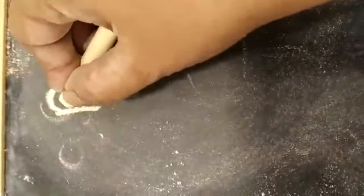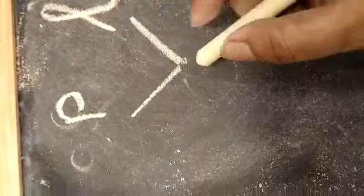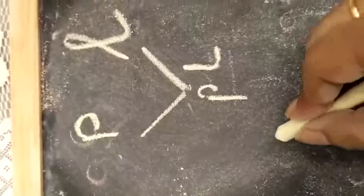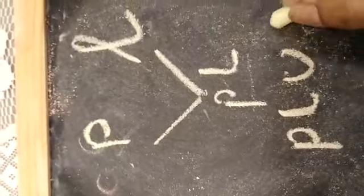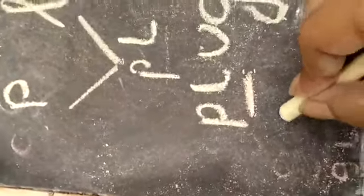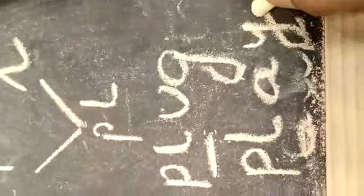Let's do one more blending. If we take the letters P and L, when P and L are blended together, it becomes 'pl'. Like plug — P, L, U, G — the 'pl' sound comes. Similarly in play — P, L, A, Y — the 'pl' sound comes in play.